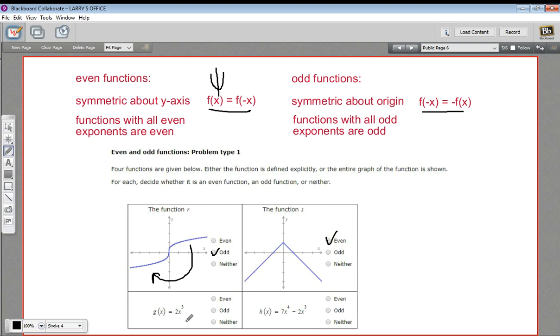Here we just have some equations for functions. We've got g of x equals 2x cubed. In this case, there's only one exponent and it's odd. That means all the exponents are odd. So this is an odd function.